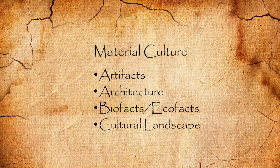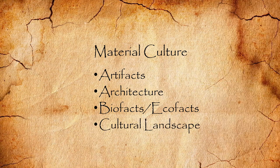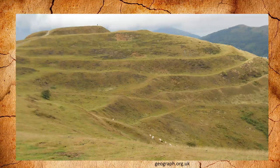We also have cultural landscape. Man likes to modify his environment to suit his purposes, with things like terracing or irrigation ditches. Here's an example of terracing at a British fort. You can see over the years the degree to which the terracing has been done.